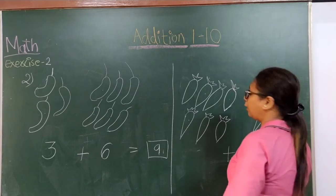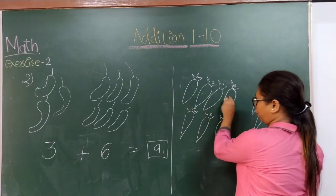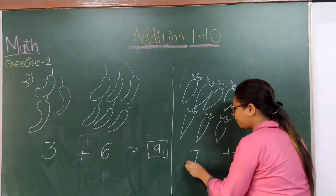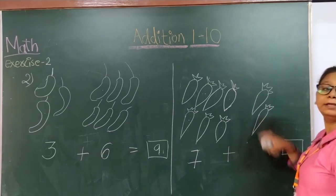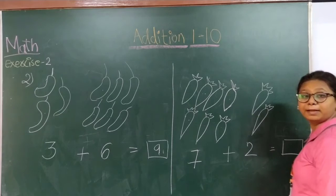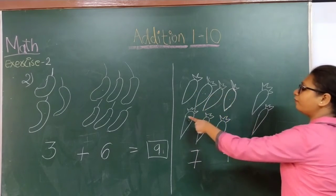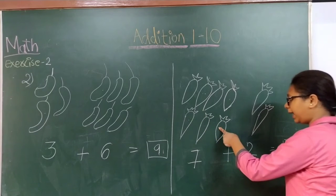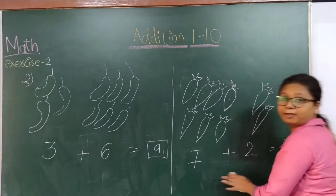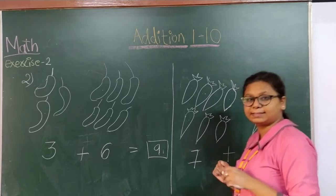Next one. How many carrots can you spot? 1, 2, 3, 4, 5, 6 and 7 carrots — so 7 over here. And over here: 1 and 2 — so 2 carrots. In total: 1, 2, 3, 4, 5, 6, 7, 8 and 9. So 7 plus 2 equals 9 carrots in total.